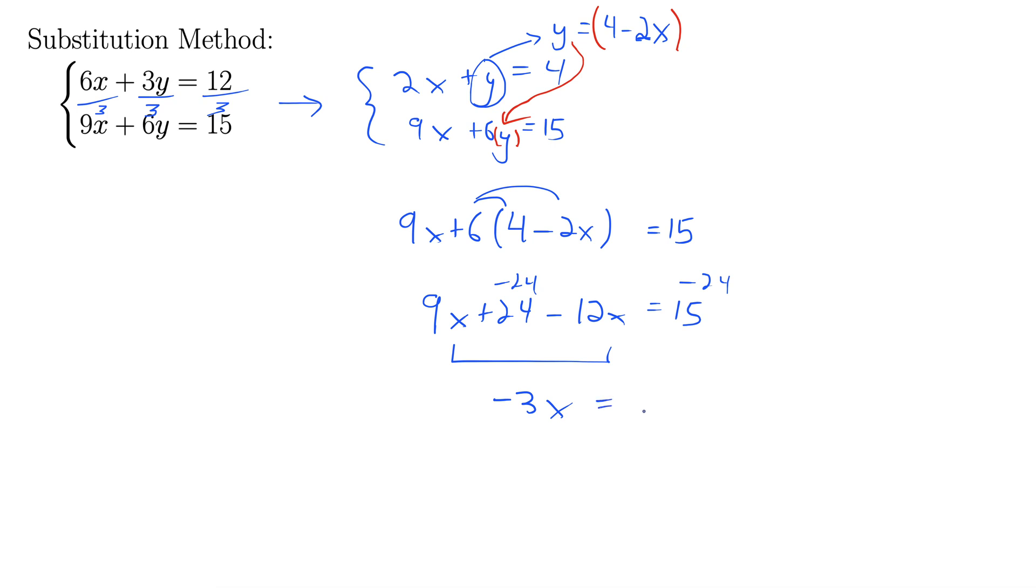Okay, so negative 24 plus 15, which gives negative 9. Finally, we divide both sides by negative 3 to get x equals 3.